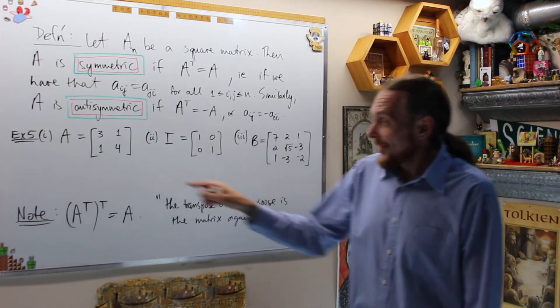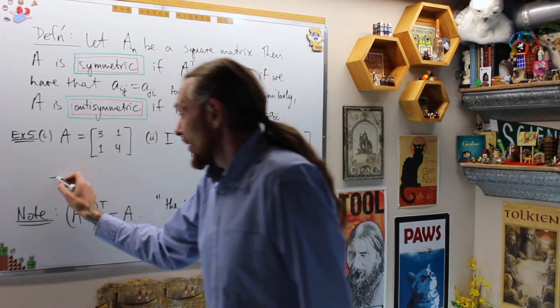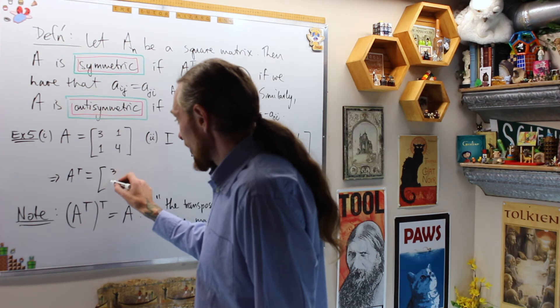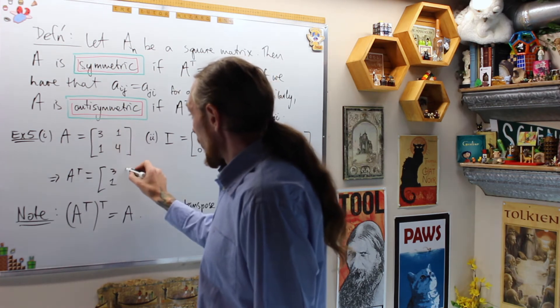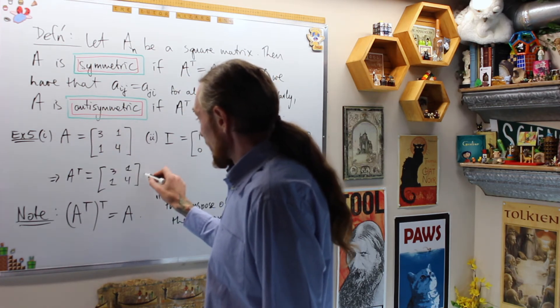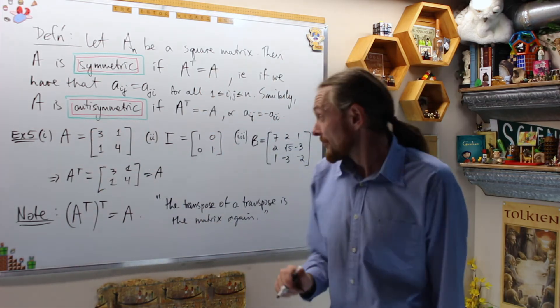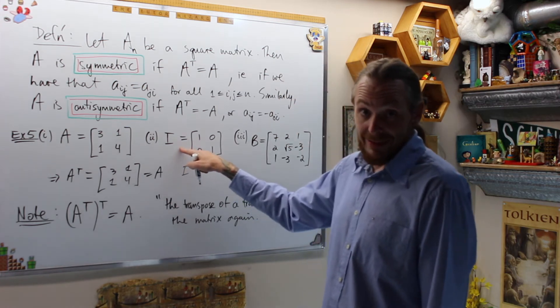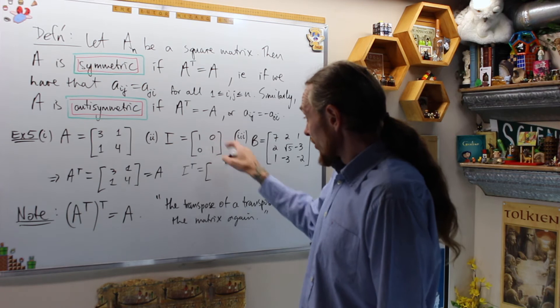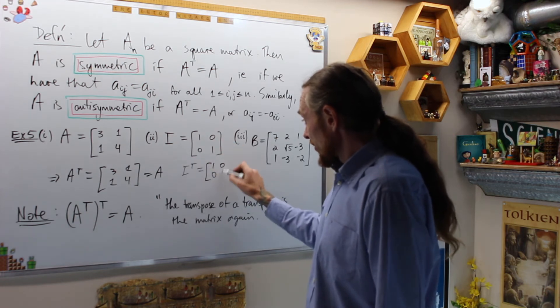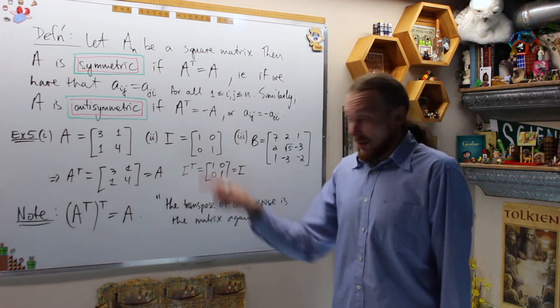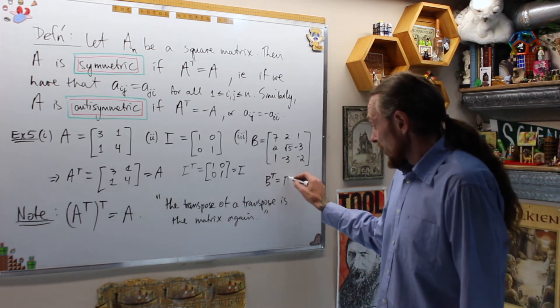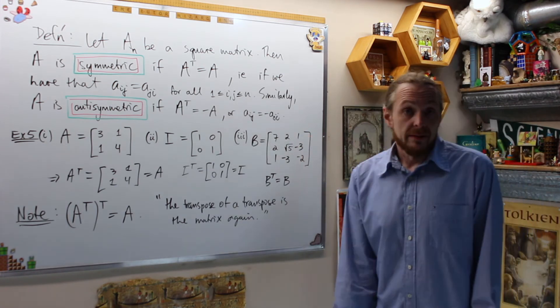For example 5, if A is [3, 1, 1, 4], we notice that A transpose is equal to this row becomes a column, 3, 1, and then 1, 4. So that is equal to A. So A is symmetric. Similarly, I transpose, this matrix will come up and be extremely important later, but I transpose it's equal to this row is 1, 0, and then this is the next, so that was I. So this is also symmetric. And sure enough, B transpose here, if you transpose it, is equal to B again. So this is symmetric.